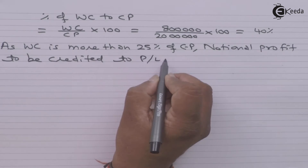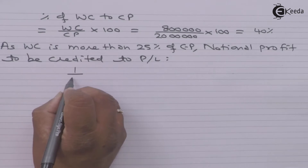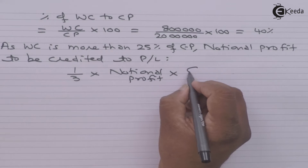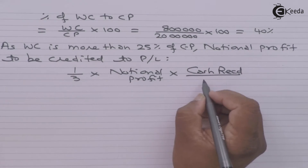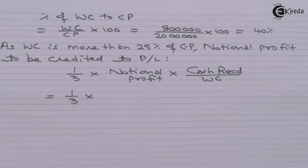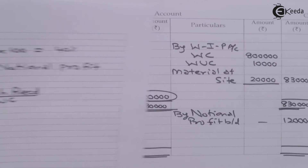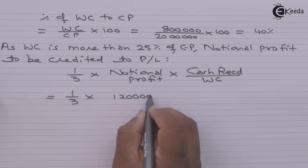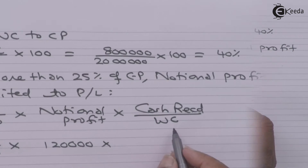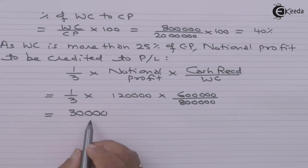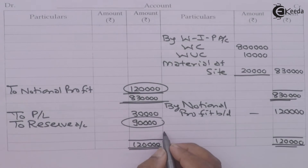Since work certified is more than 25 percent of contract price, notional profit is to be credited to profit and loss account. The formula is: one-third multiplied by notional profit multiplied by cash received upon work certified. Notional profit is 1,20,000, and the contractee pays 75 percent of work certified. Applying the formula: one-third multiplied by 1,20,000 multiplied by 75 percent equals 30,000. So out of notional profit, 30,000 will be transferred to profit and loss account and the balance 90,000 will be transferred to reserves.